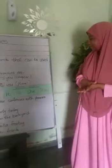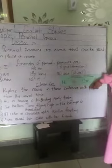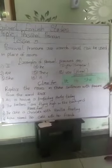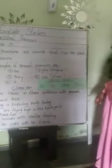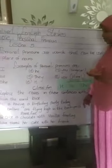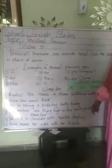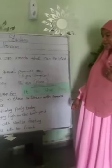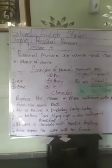Now we're moving to our class form. I have a word box here. In my word box we have: it, he, she, and they. We are going to replace the noun in these sentences with pronouns from the word box. The first sentence is: 'Ali is having a birthday party today.' We all know Ali is a noun because it is a name of a person.